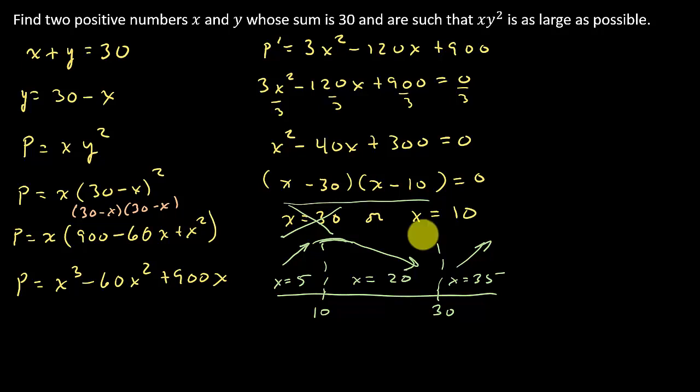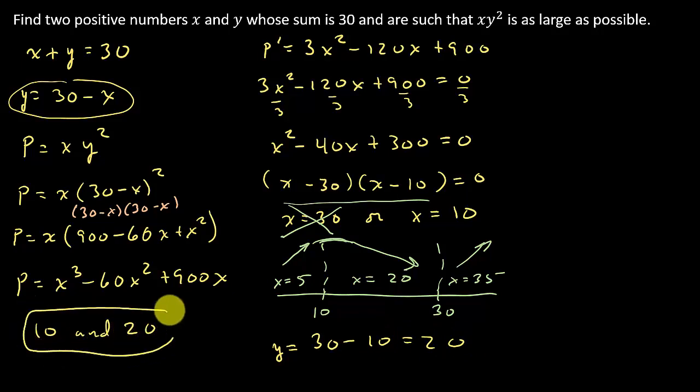So it's x equal 10, and then, so that's my x value, but I want to find two positive numbers. And so, if I do that, I need to take the 10 and plug it in here to figure out what y is. And so, y is equal to 30 minus 10, which equals 20. So that would be 10 and 20 would be my solution.